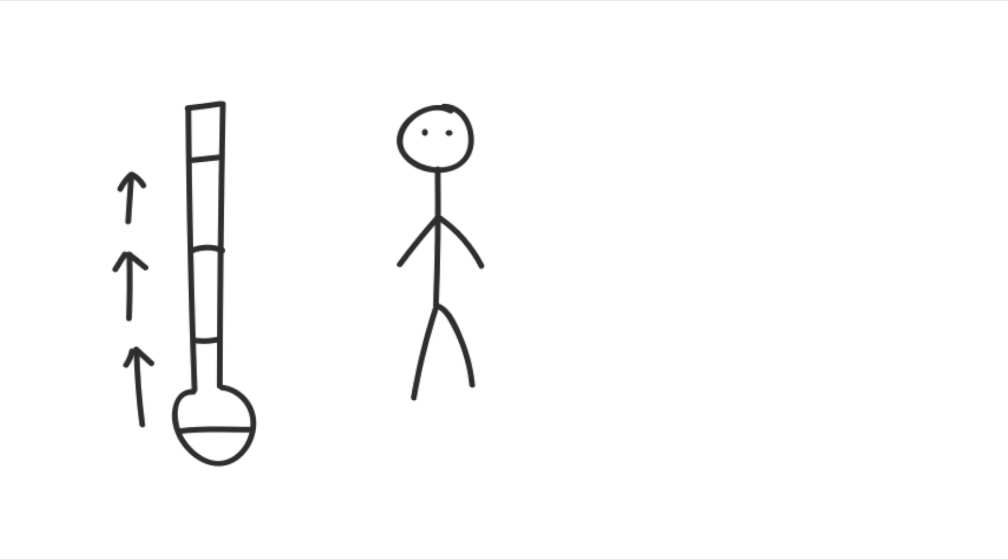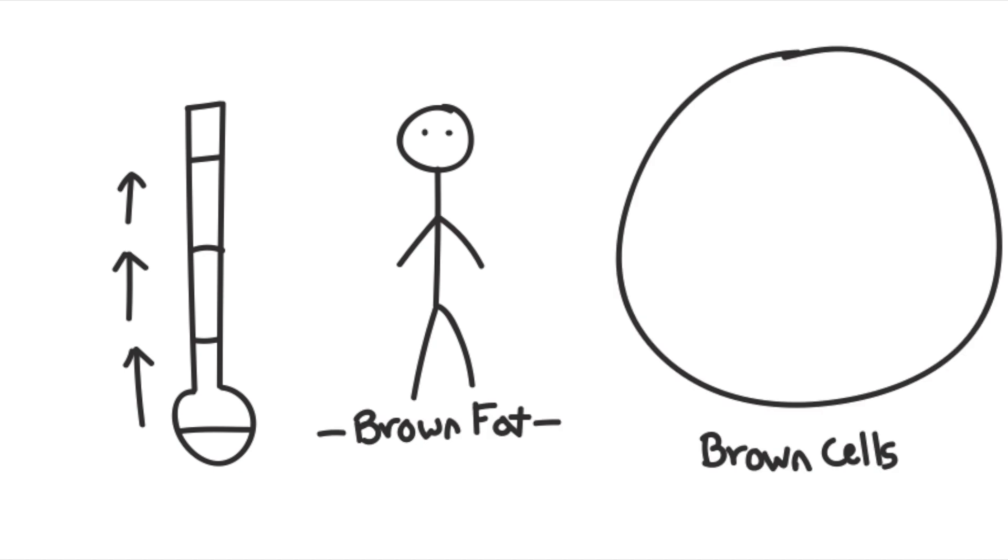If somehow you have survived the cold this long and you are in the middle of an ice age, you develop a specialized set of cells. These are called brown cells and they form brown fat. Brown cells' only objective is to generate heat.